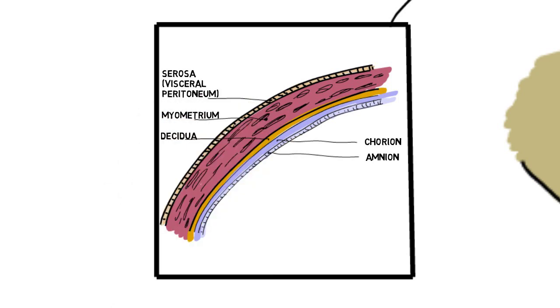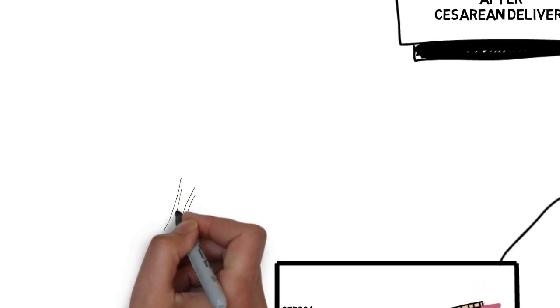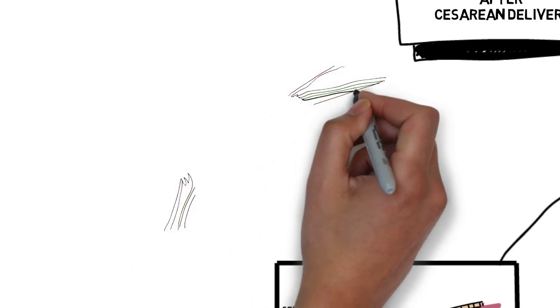The suture line re-approximated the myometrium. Some may suture the visceral peritoneum also. A classic rupture involves disruption of all of these layers. Obviously, since one of them was a suture line, the myometrium, the rupture involved a dehiscence of the myometrial closure.